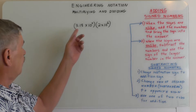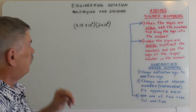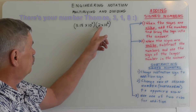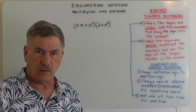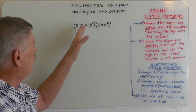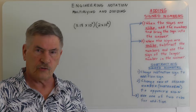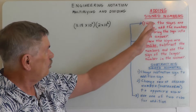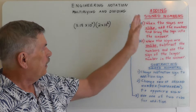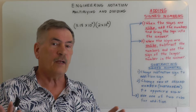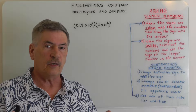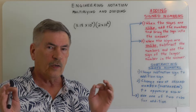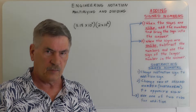I have a first example up here. We've got 3.18 times 10 to the second power times 2 times 10 to the sixth power. Now, we're going to be working with signed integers here, so we're going to be adding and subtracting. I've got our notes over here on the side. When we're multiplying numbers in engineering notation or scientific notation, we're going to be adding the exponents together.